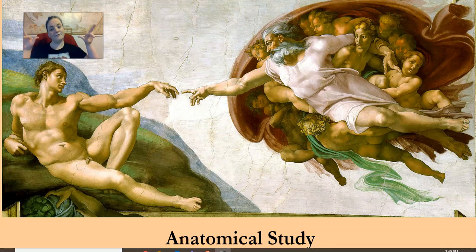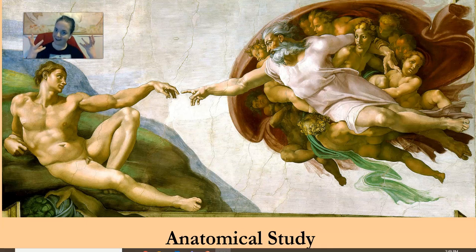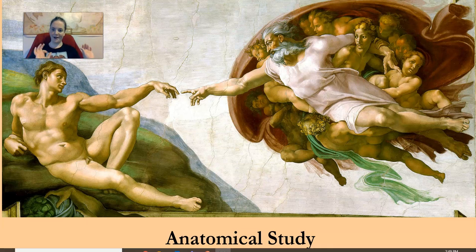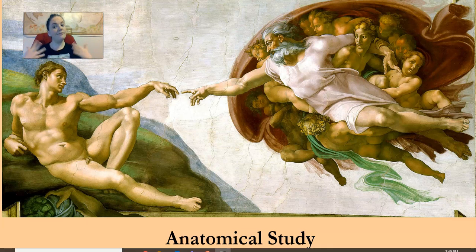This is from the Sistine Chapel. This is Southern Renaissance, but honestly I couldn't figure out a better, more obvious example of that extreme anatomical study — making people that have all of the muscles in the right place, that have their jaws just so, that aren't highly stylized like paintings from the Middle Ages were. Instead, they're much more realistic.